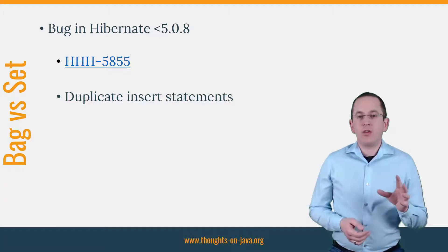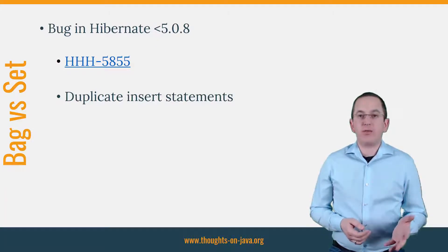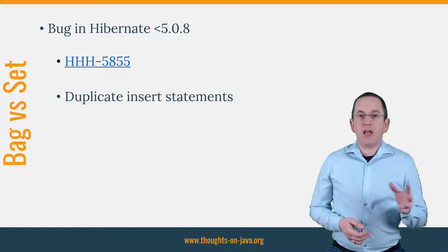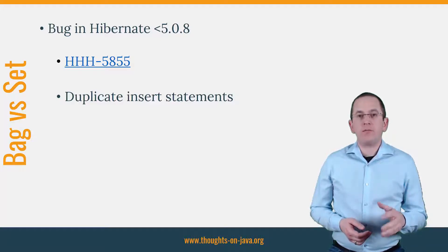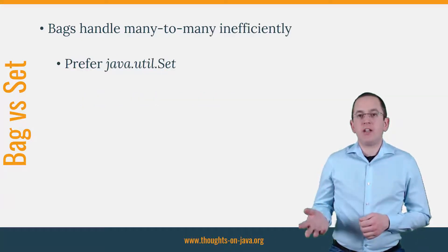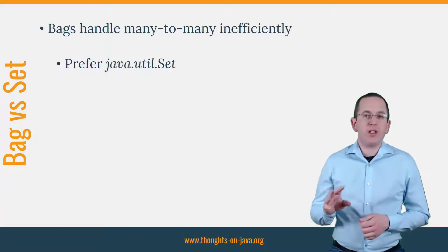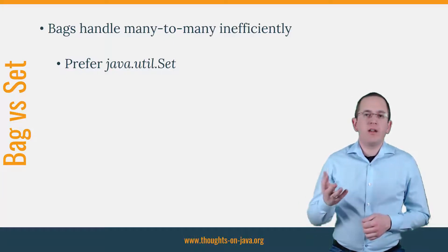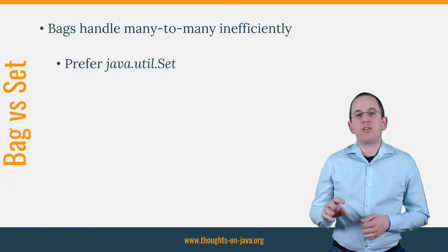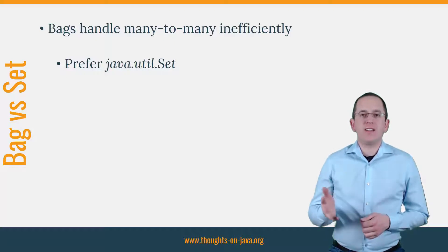First of all, if you are using a Hibernate version older than 5.0.8, you should be aware of bug 5855. When you used the java.util list and merged the parent entity, Hibernate generated two insert statements for each child entity. Hibernate handles many-to-many associations very inefficiently if you map them to a bag. You should therefore always prefer a java.util set for many-to-many associations. Let's jump into the IDE and take a look at this problem.